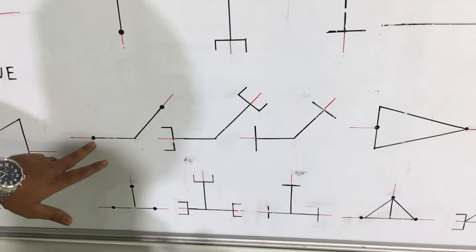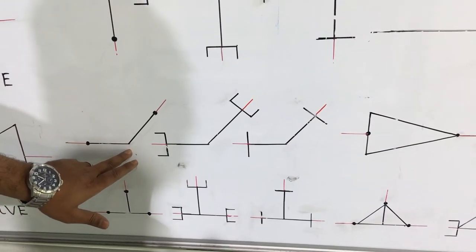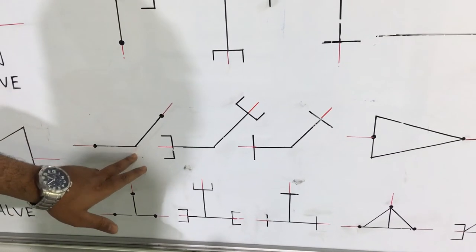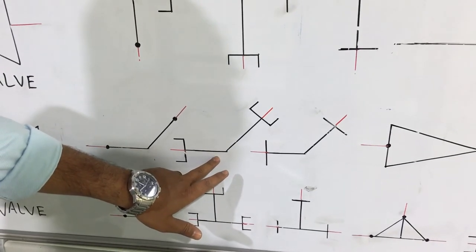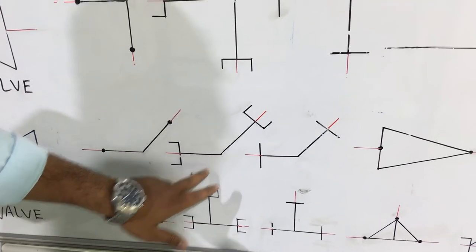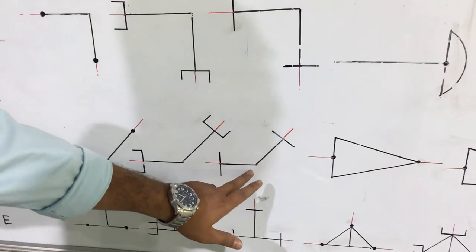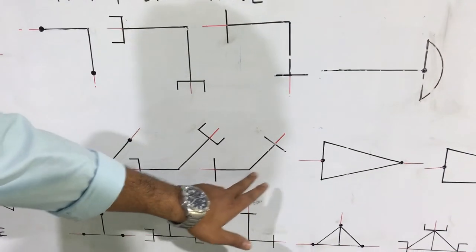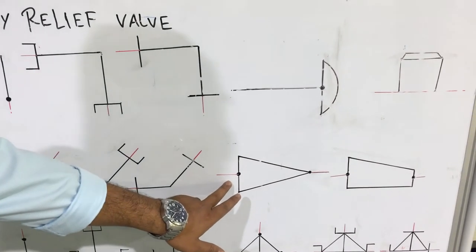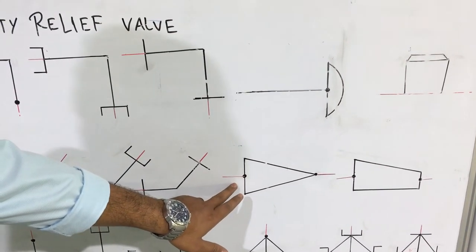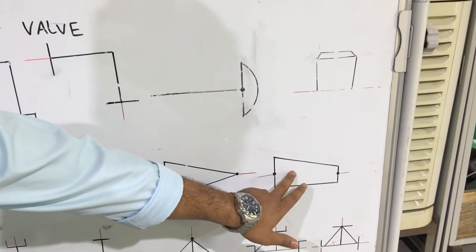This is the symbol of butt weld 45-degree elbow. This one is the symbol of socket weld 45-degree elbow. This one is the symbol of threaded 45-degree elbow. This one is butt weld concentric reducer, and this one is butt weld eccentric reducer.